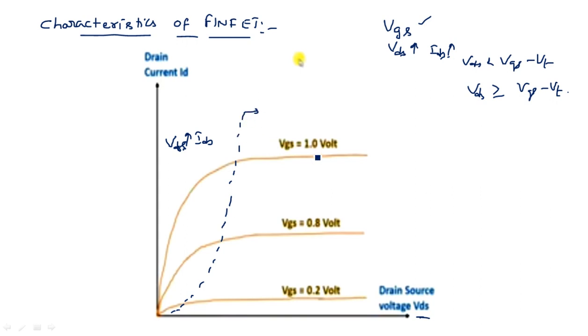After that point, the transistor enters the saturation region. Different VGS values will have different characteristics curves. These are the VI characteristics of FinFET, which are similar to the conventional planar MOSFET — no change in terms of operation except the traditional multi-gate setup.